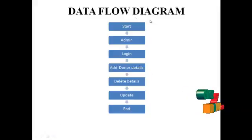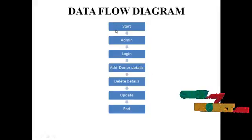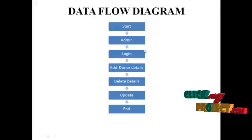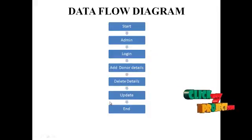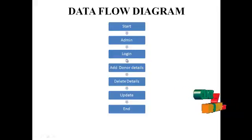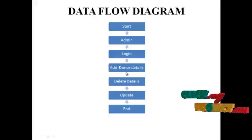Now I am going to explain the data flow diagram. First, we start the project and the admin enters the system. The admin logs in using the username and password. This is the blood bank management system. The admin enters and then adds the donor list.